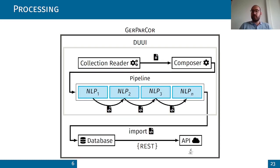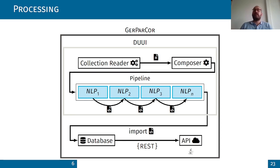This is the GAEPA Core DUUI process. It begins with the collection reader which reads all the selected data and sends them through the composer. The composer collects the data and sends them through the pipeline, where they are pre-processed with different NLP processing tools selected using the DUUI. After that, we import the output of the DUUI process into our database, making it available via a REST API which can be used by different kinds of people.